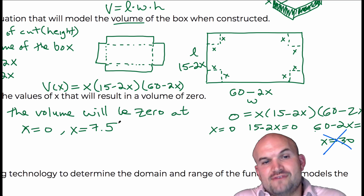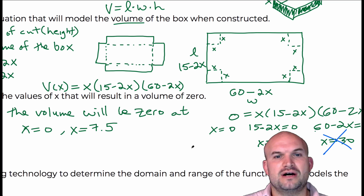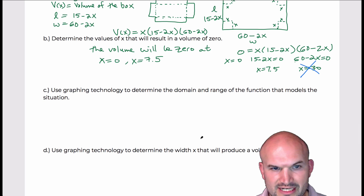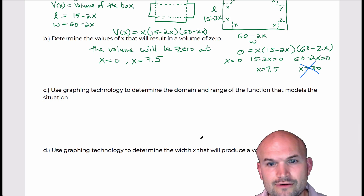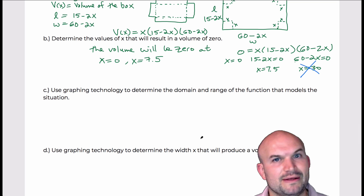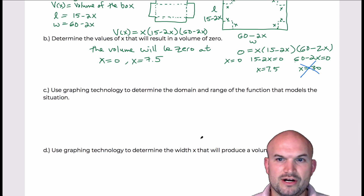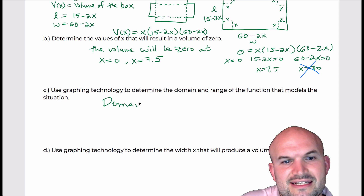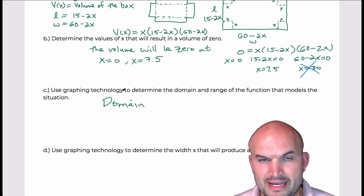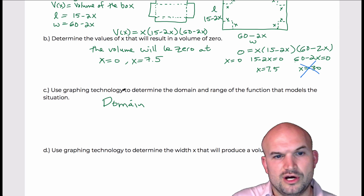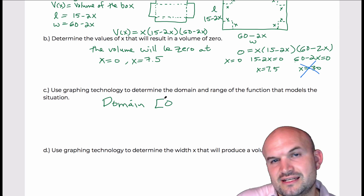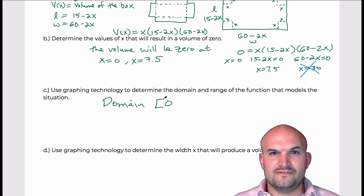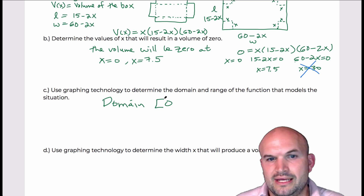It's important to understand domain restrictions in context. The length of the cut can't be negative, so anything less than zero doesn't make sense. A cut of zero means no height and therefore no volume. We can use that information to say the domain goes from 0 to 7.5. Going larger than 7.5 doesn't make sense because the cut would be larger than the actual piece of cardboard.